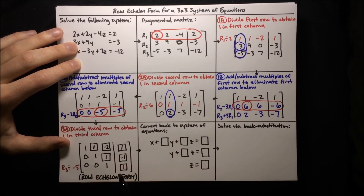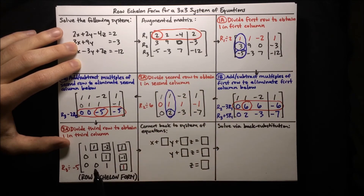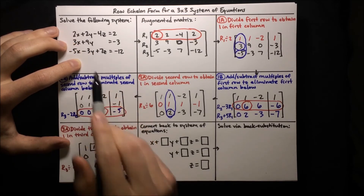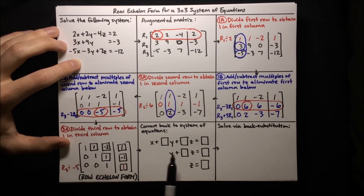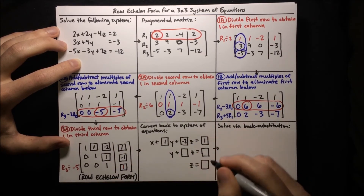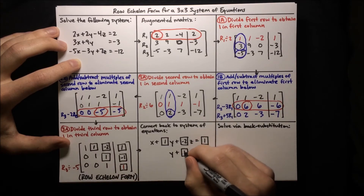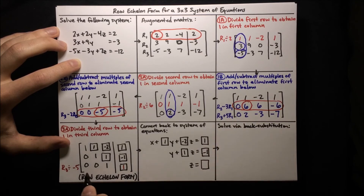There's our row echelon form matrix. This matrix is equivalent to the original augmented matrix using row operations, so the corresponding system of equations will be equivalent to the original system but much easier to solve. Let's write this system using the coefficients: x plus y minus 2z equals 1; then y plus z equals negative 1; and z equals 1.